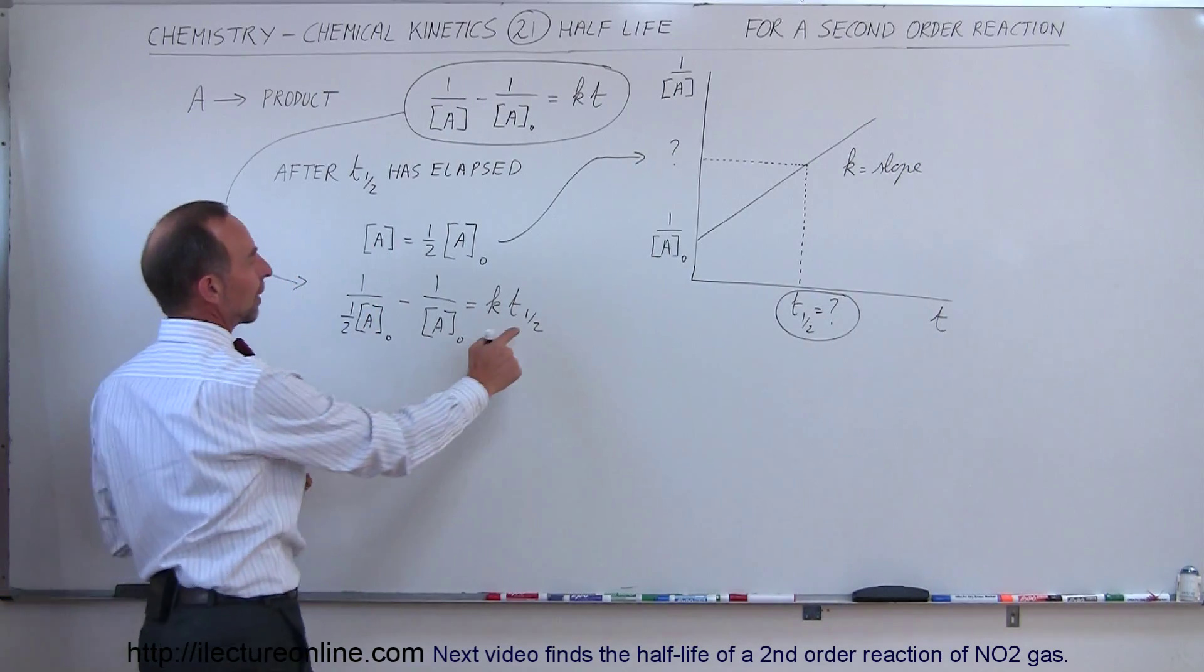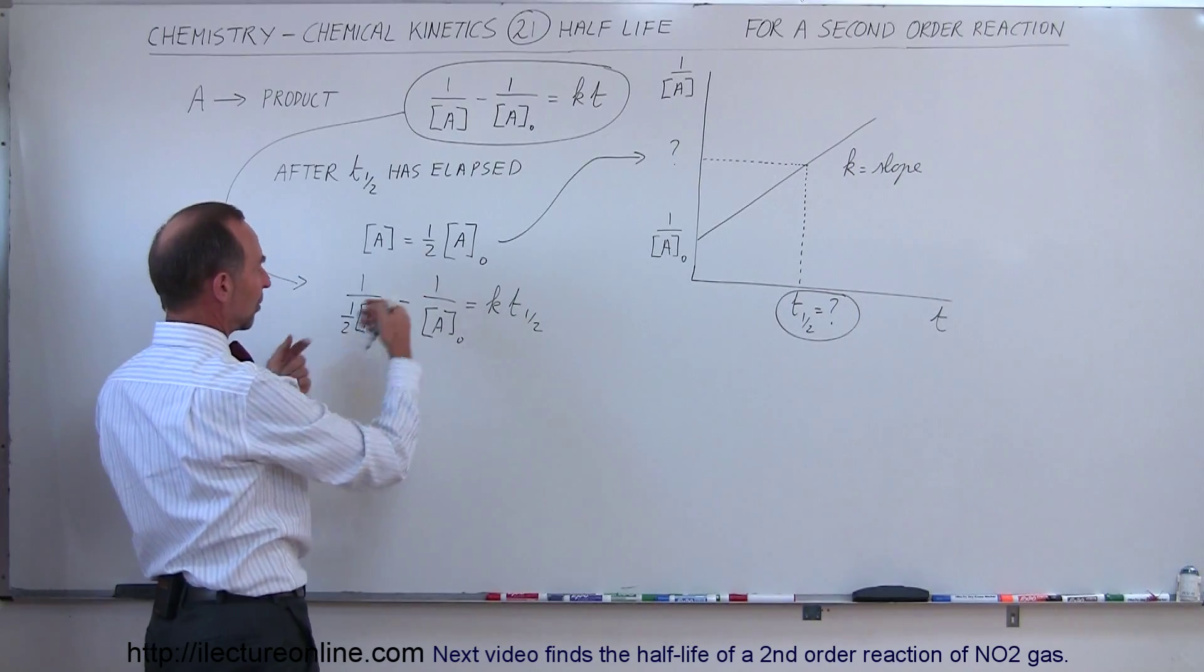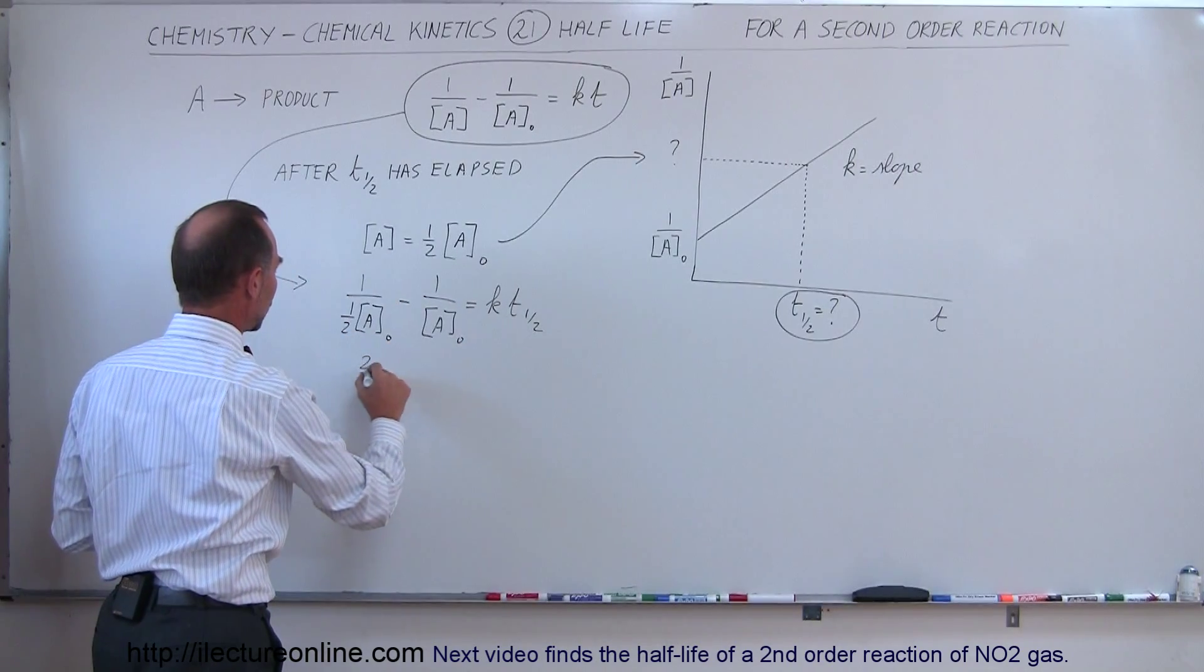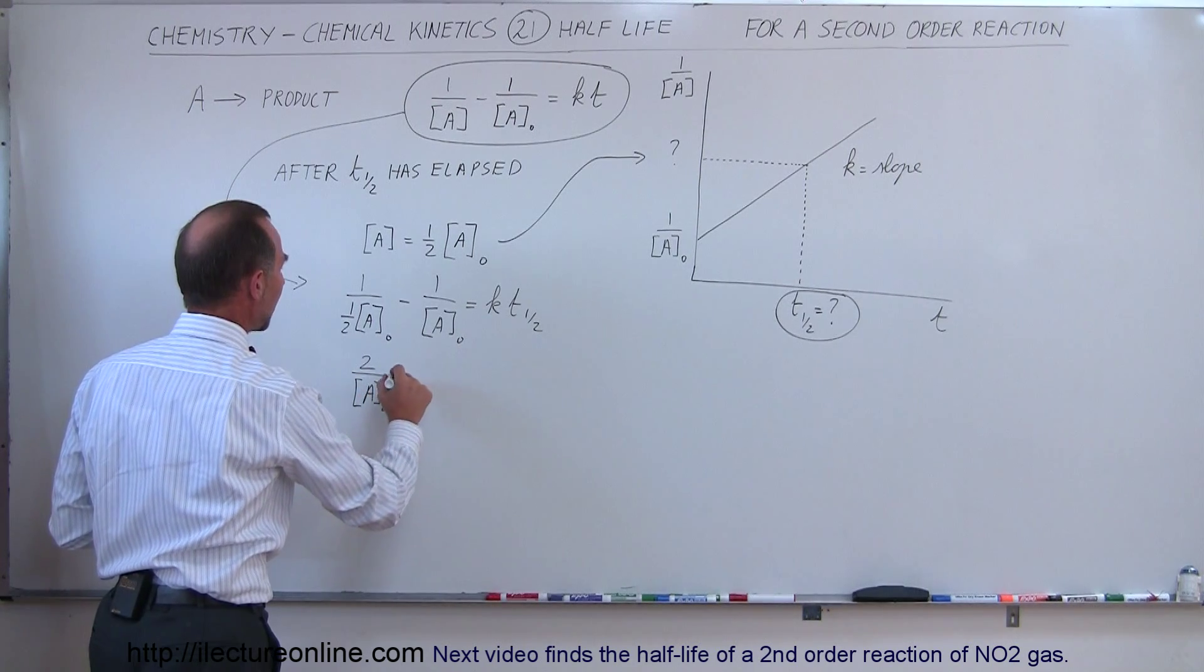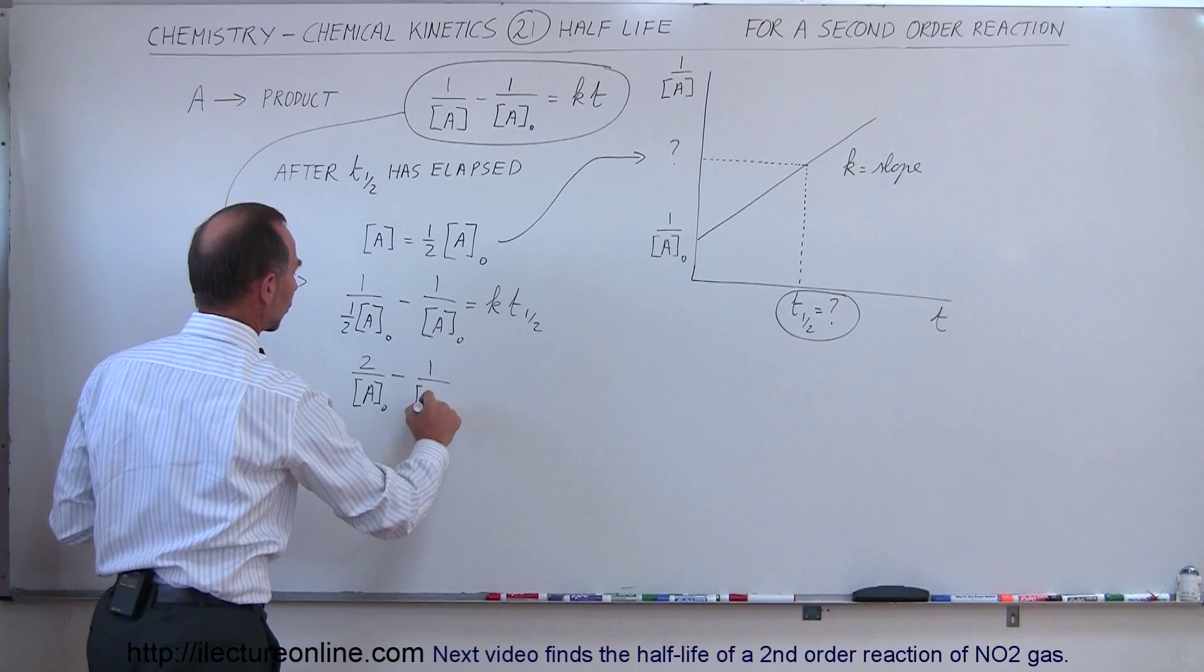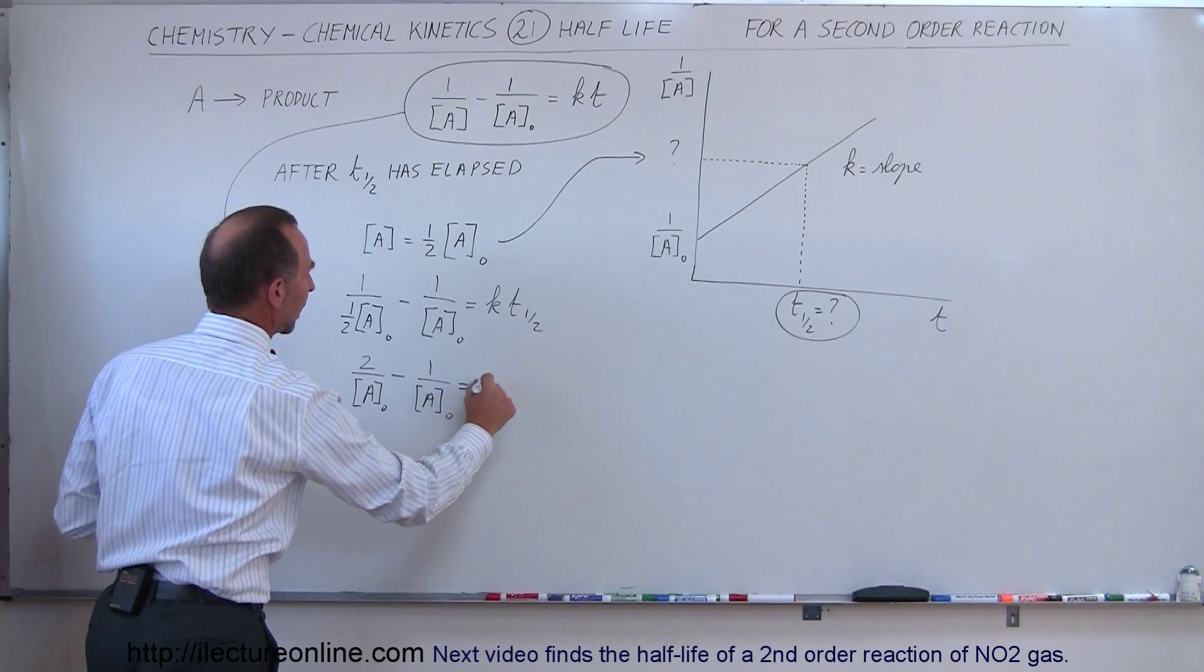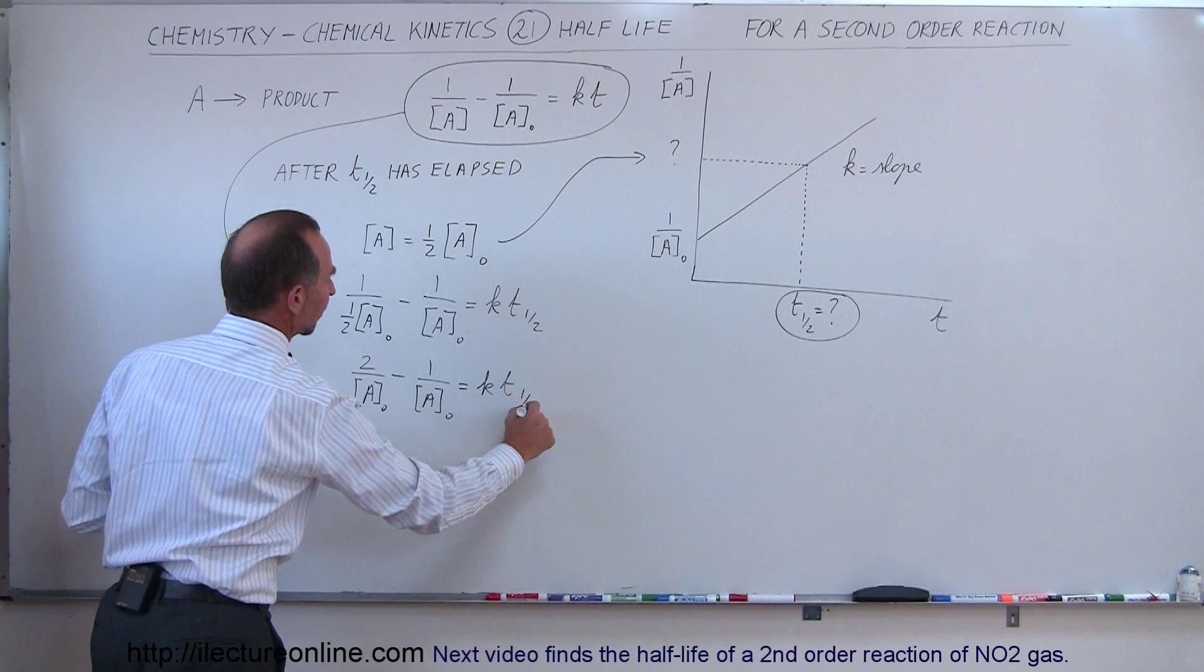And now what we're trying to do is find out what this is equal to. So let's simplify this a little bit. First, we'll put the 2 on top, so we get 2 divided by the concentration initially of A, minus 1 over the initial concentration of A, is equal to K times the half-life time.